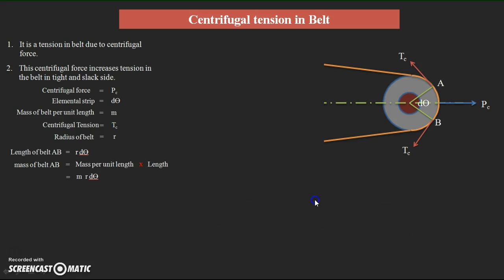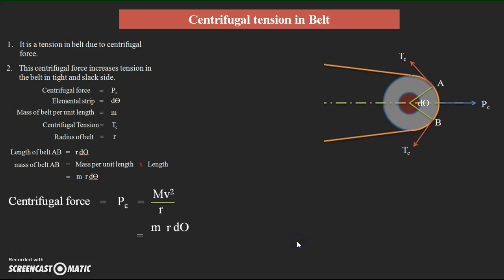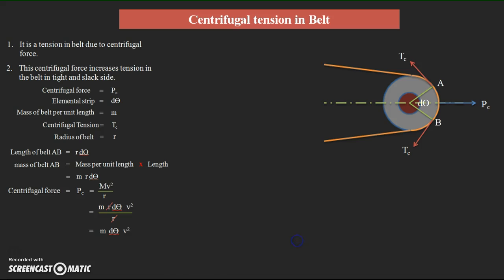The centrifugal force PC for any rotating mass element is given by mv²/r. Substituting the mass of the element (m·r·dθ) into this formula: PC = (m·r·dθ)·v²/r. The r cancels, giving PC = m·dθ·v².